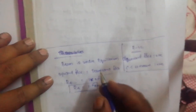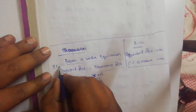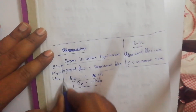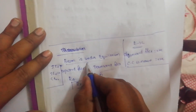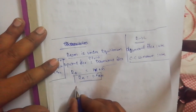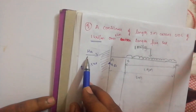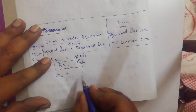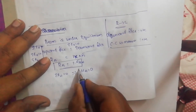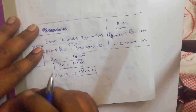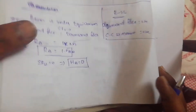Equilibrium conditions: summation of horizontal forces equals zero, summation of vertical forces equals zero, and summation of moments equals zero. For horizontal forces, the only horizontal force is the horizontal reaction at point A, so Ha equals zero. In cantilever problems, no further moment calculation is needed to identify Ha; we go directly to the shear force calculation.